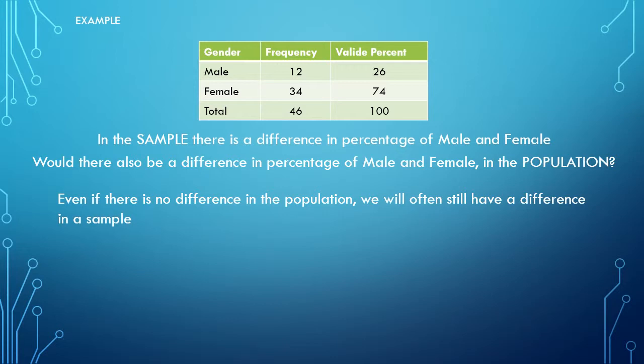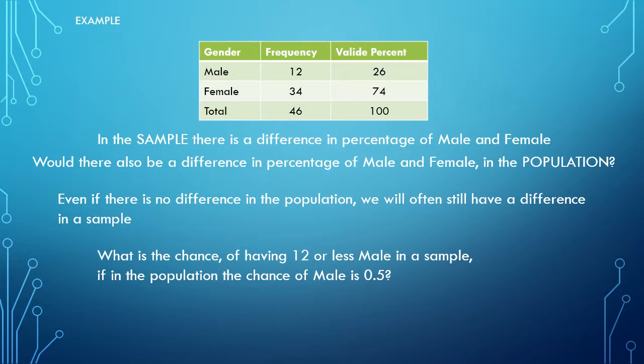Even if there is no difference in the population, we will often still have a difference in the sample. So that we have differences in the sample doesn't mean that there will also be differences in the population, and the other way around. So what we can actually ask ourselves is what is actually the chance of having 12 or less males?